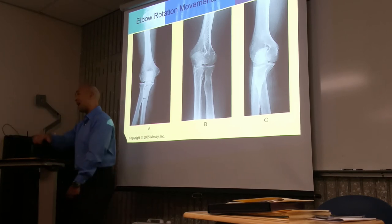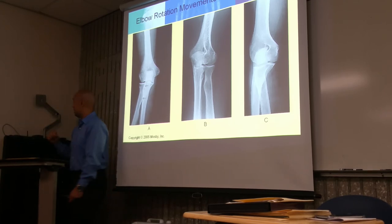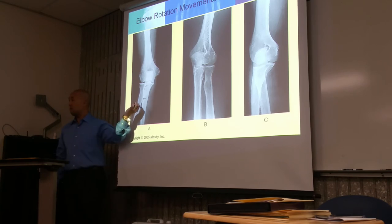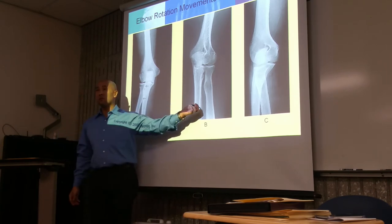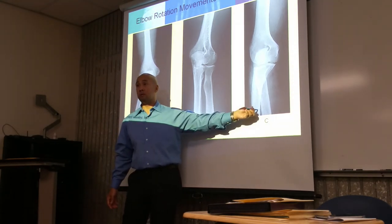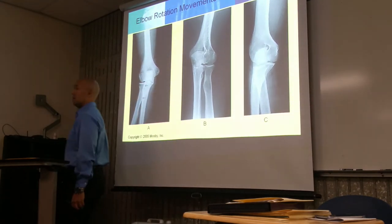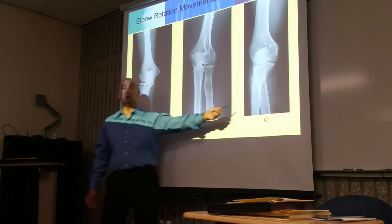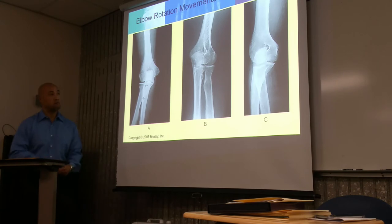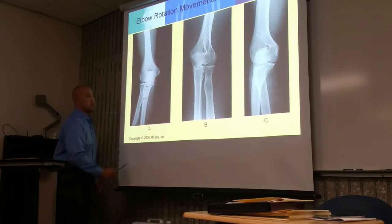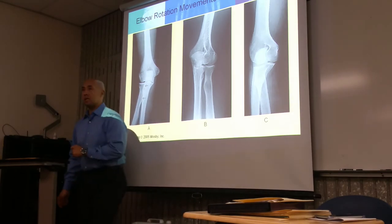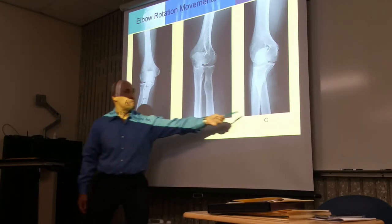We can label the three positions: AP, external oblique, and internal oblique. External oblique is the lateral oblique; internal oblique is also known as the medial oblique. So: AP, lateral oblique, medial oblique.